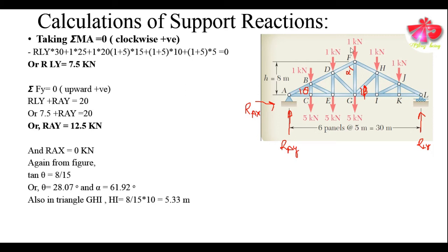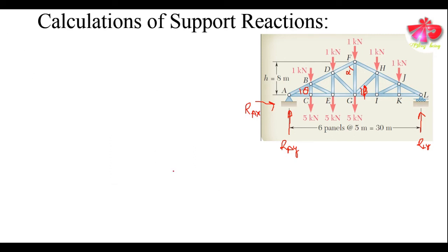Using similar triangles, the height HI comes out to be 5.33 meters. If we assume the angle made by GH with the horizontal direction to be β, then β = 46.83 degrees. Now, after finding out the support reactions, we need to cut a section.